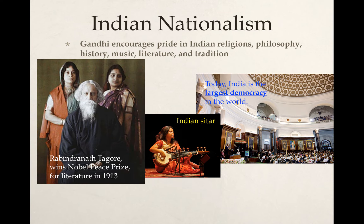The last one is really Indian nationalism. Gandhi promoted Indian culture, Indian music, Indian literature, and Indian tradition. This was a difficult task because Indians were such a diverse people. Maybe the biggest difference between Indians was the difference between religion — Hinduism and Islam — but the Indians were able to really unite against British imperialism. All Indians had one thing in common, which was that they were ruled by a foreign power and they didn't want to be. So Gandhi really encouraged all these various Indian cultural traditions while still trying to unite the Indian people in their fight against the British.